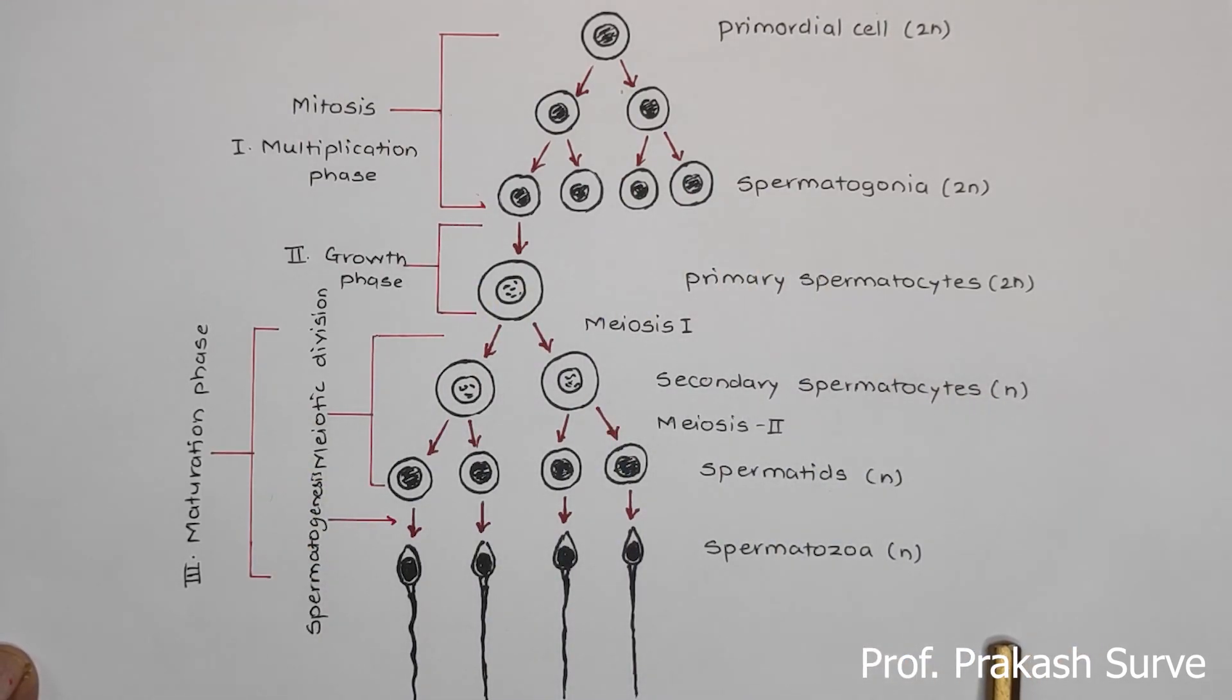This is an important diagram which may come for two or three marks, or describe the spermatogenesis with the help of a diagram may come for four marks. So this, everything we have completed.